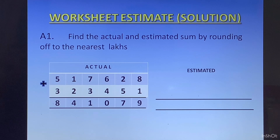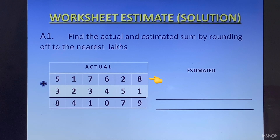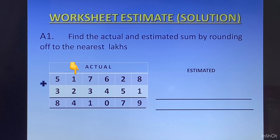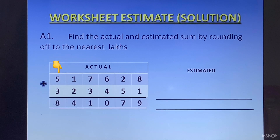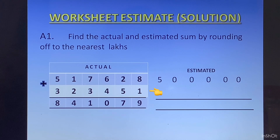The actual sum is 841079. Now let us round off. The first number is 517628. We have to round off to the nearest lakh, so we will look at the 10,000 place. In the first number we have 1 at the 10,000 place. Since 1 is less than 5, we will not change the digit at the lakhs place. The number will round off to 5 lakhs.